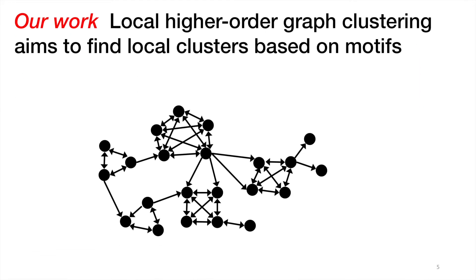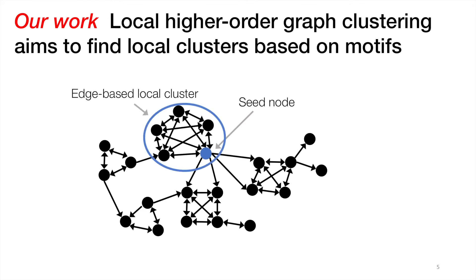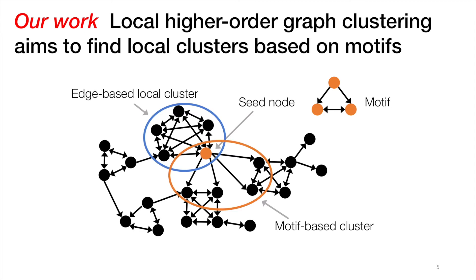This is exactly what we did for this work. If we were to start with the network and a seed node, the classic idea is to find an edge-based cluster containing that seed node. But instead, we could start with a seed node and a motif that we're interested in, and then find a motif-based cluster containing that seed node.